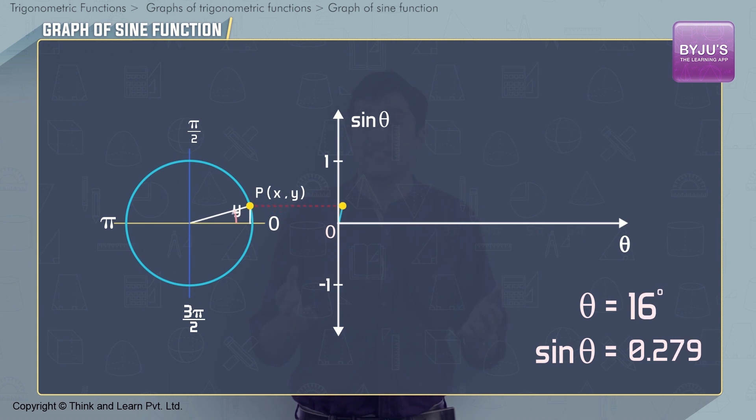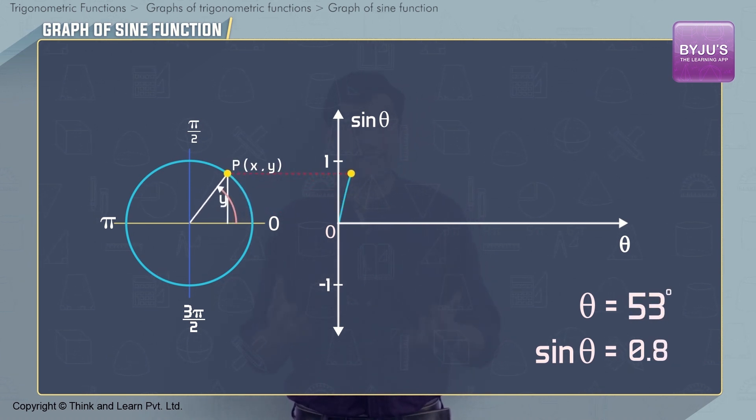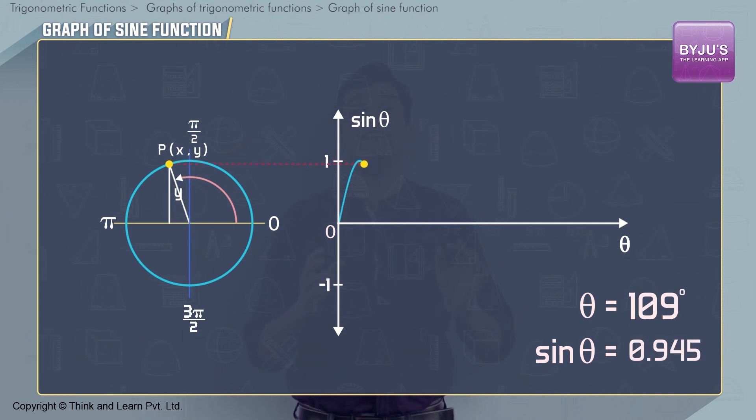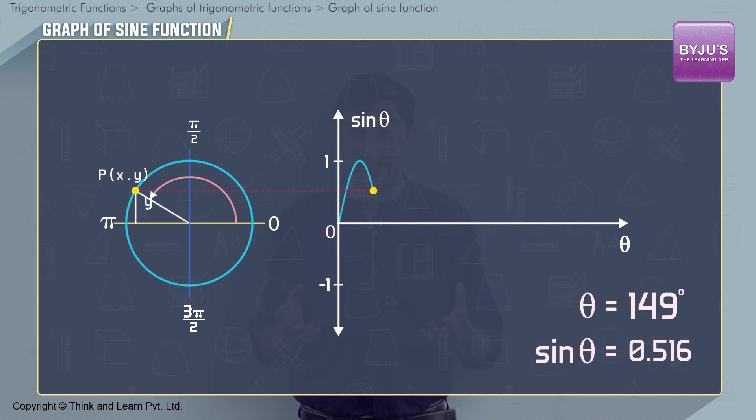As theta increases, sin theta also increases, and at theta equal to π/2, it reaches 1. After that, the value of sin theta starts to decrease, and at theta equal to π, sin theta becomes 0 again.